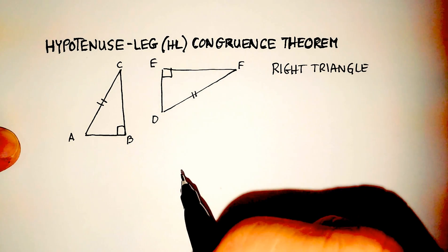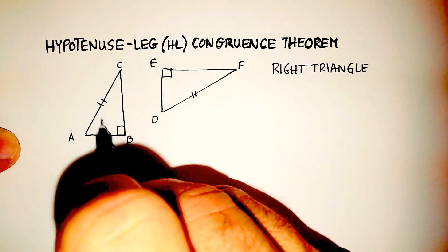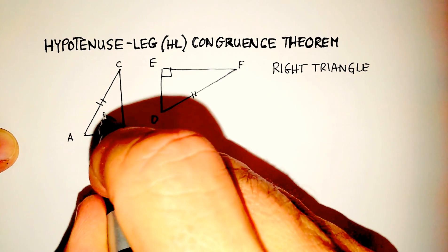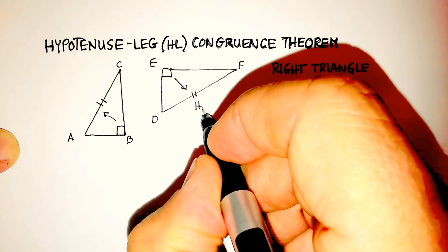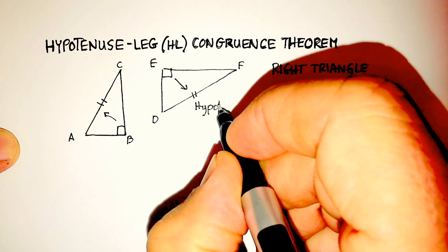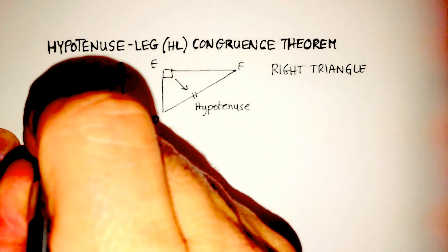So let's talk about some of the things that are involved here. Opposite from the 90 degree angle is what you call your hypotenuse. So hypotenuse. And you have the hypotenuse here, and in this one it would be over here.